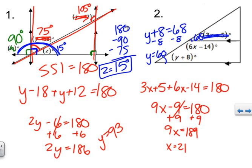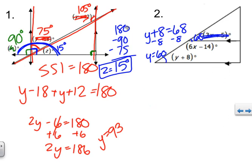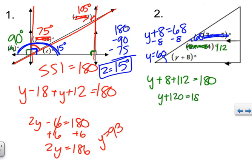Now substituting x equals 21 to find y. You can use corresponding angles: 3 times 21 plus 5 gives this angle as 68 degrees. Since corresponding angles are equal, y plus 8 equals 68, so subtracting 8 gives y equals 60. Alternatively, 6 times 21 minus 14 equals 112, and using same side interior: y plus 8 plus 112 equals 180, giving y equals 60. Both methods give the same answer.